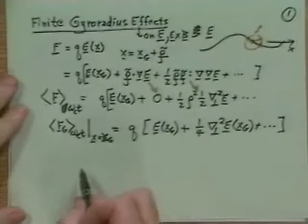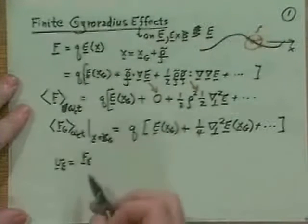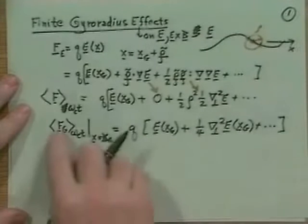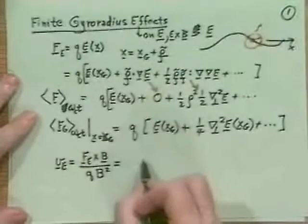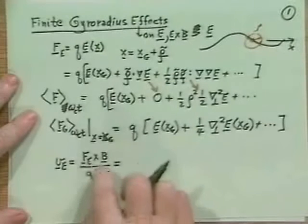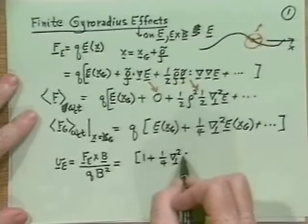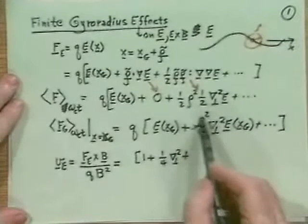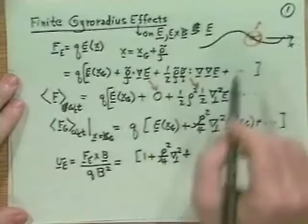This has an effect on the E×B drift. Recall the E×B drift equals the electric force cross B divided by QB². If we stick in this averaged electric field seen at the guiding center, Q cancels out, and we get E×B/B² but not the local E — instead it's (1 + ¼ ρ² ∇²_⊥) acting on E at the guiding center, cross B over B².